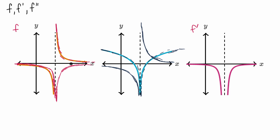The left graph looks a lot like what I just sketched as a candidate derivative for this middle graph. So I would say that the middle graph is f, and then the left graph is its derivative, which makes it f prime. And we already established that the right graph is the derivative of the left one, so if it's the derivative of f prime, it's the second derivative.